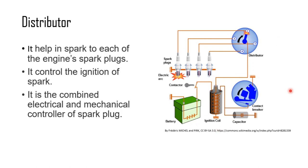The distributor basically distributes electricity to different spark plugs. It controls when each spark plug should ignite. It is a combination of electrical and mechanical control — it rotates mechanically from point to point, and when the electrical contact is made, it fires the corresponding spark plug in sequence.